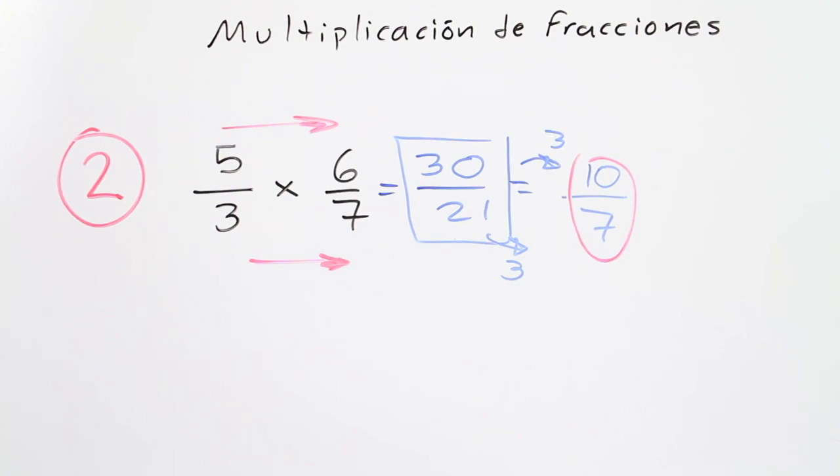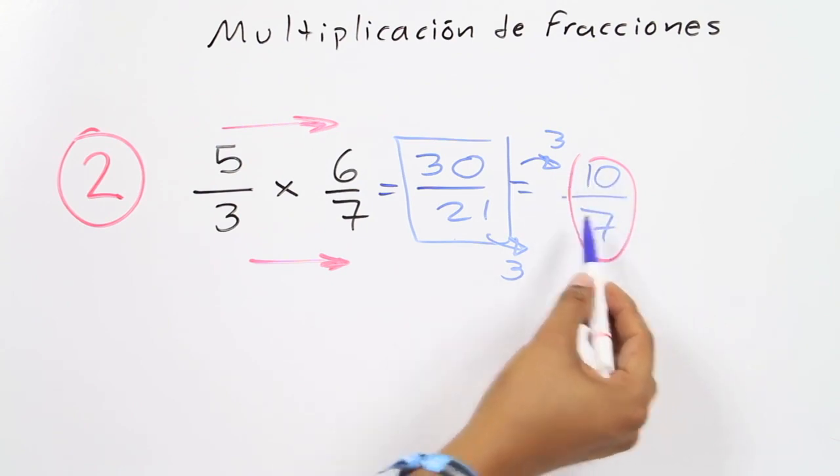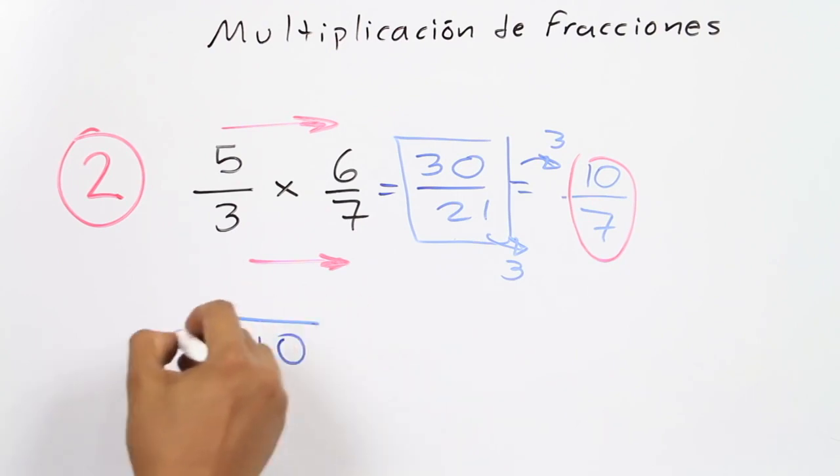On the other hand, 10 is bigger than 7, which means that 10 over 7 is an improper fraction. We can change it into a mixed fraction. Now is the moment to remember how to use long division. In this case, how many times does 7 go into 10? It's 1, and 10 minus 7 is 3 as remainder.